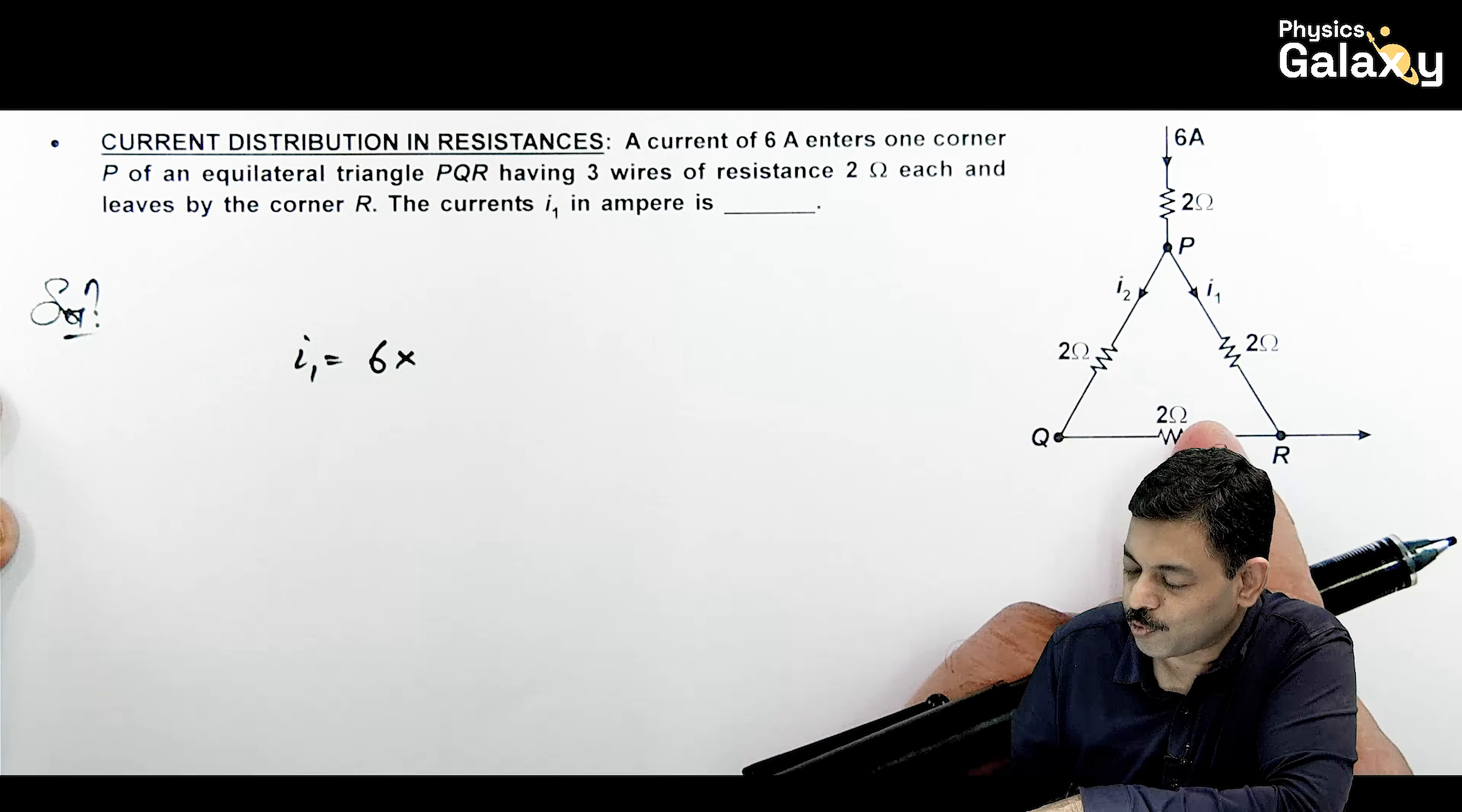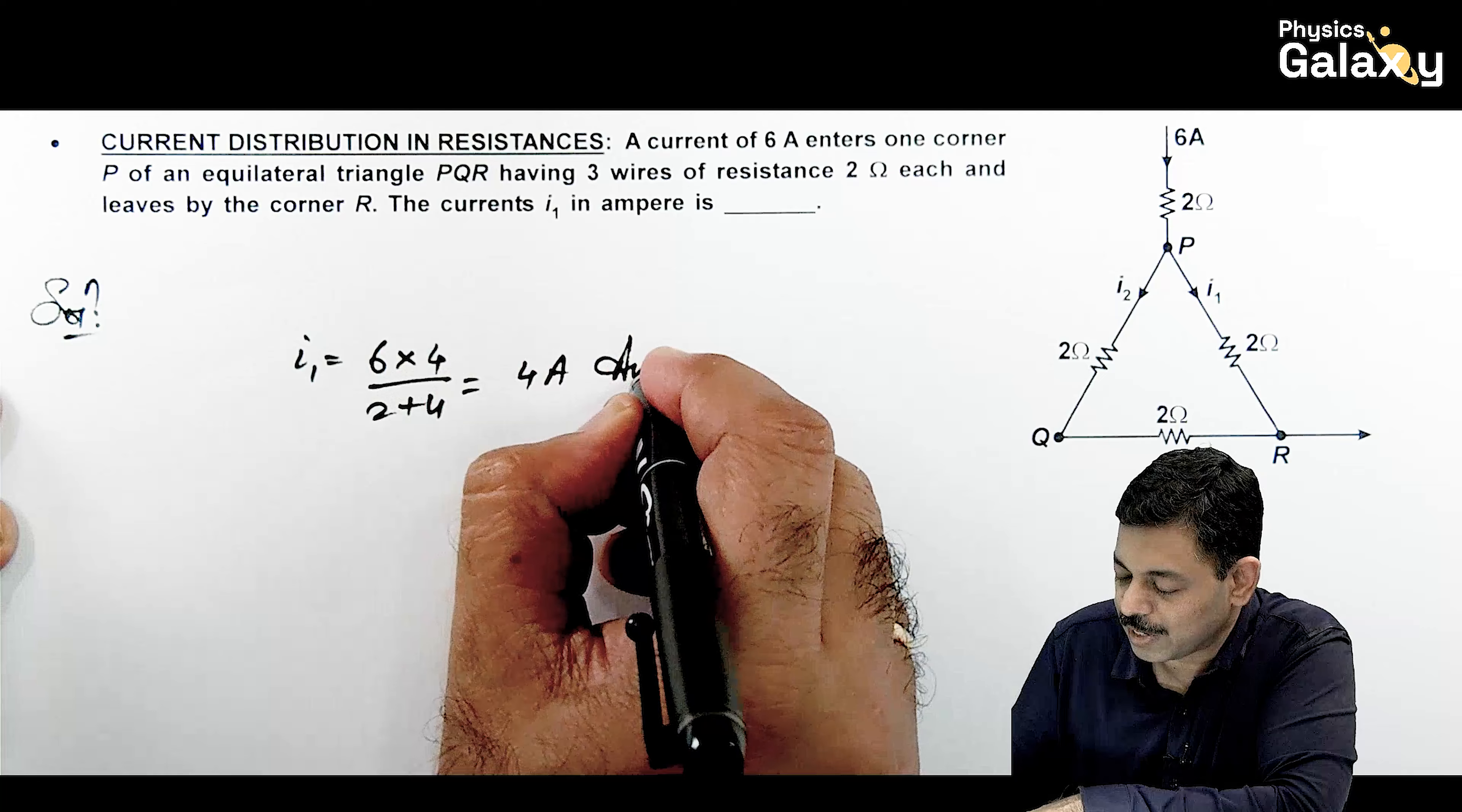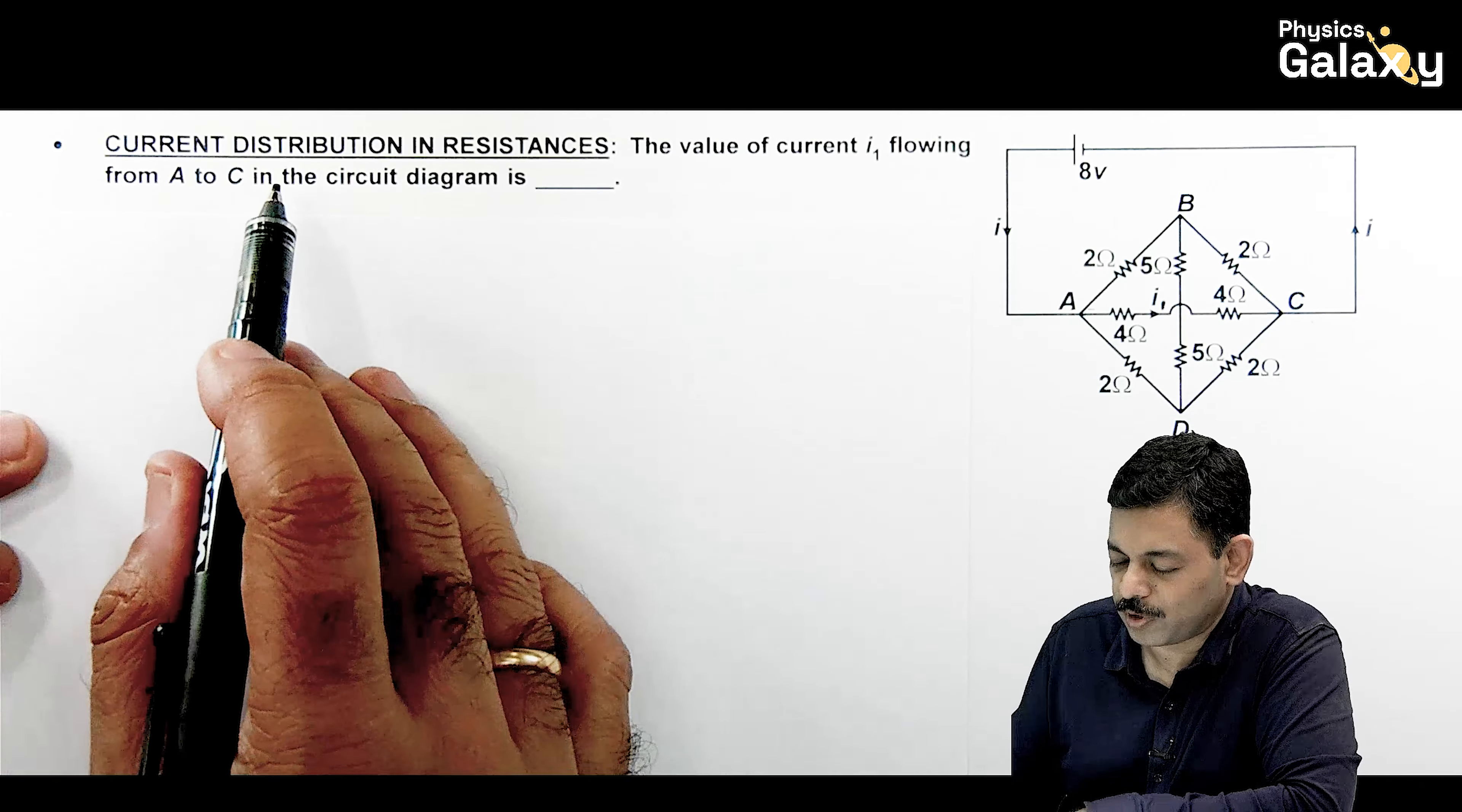How much current will be in 2 ohms? It will be an inverse ratio. So it will be 6 multiplied by 4 ohms divided by 2 plus 4. This comes out to be 6 multiplied by 4 divided by 6, which gives 4 amperes. So directly in one line, you are getting the result of this problem.